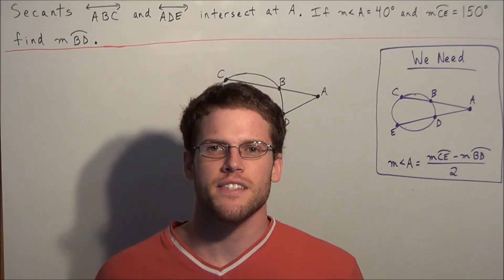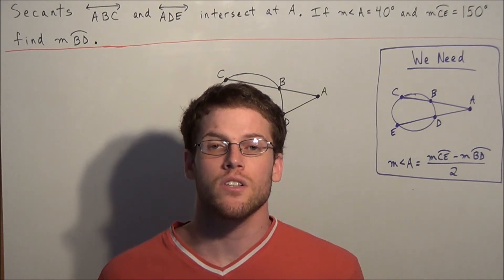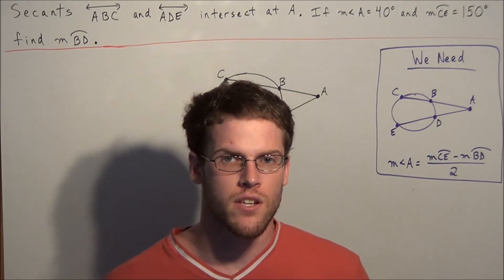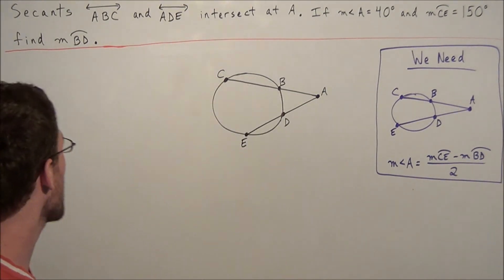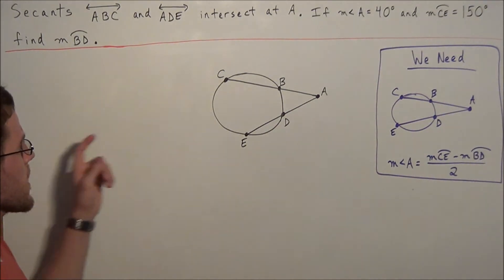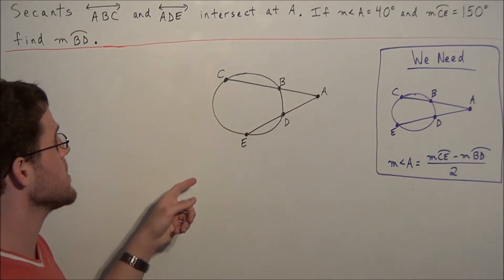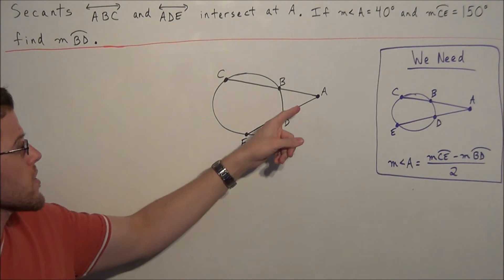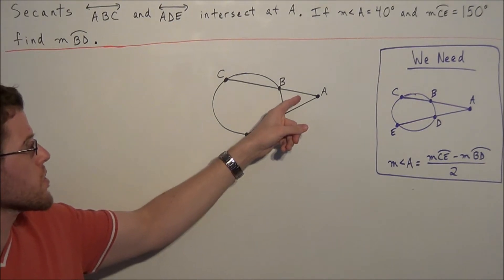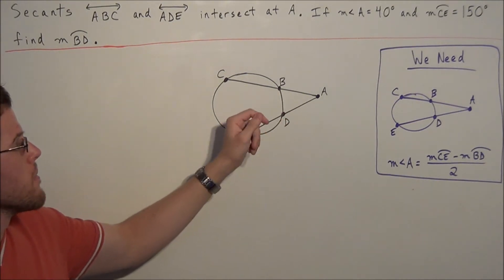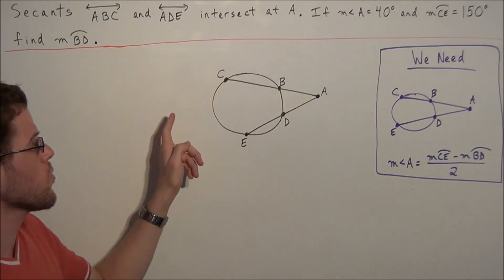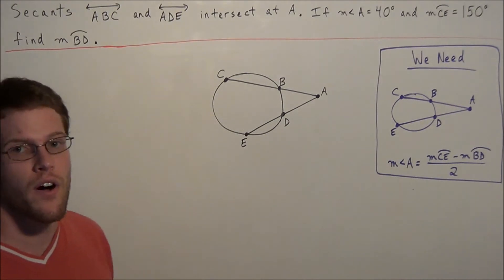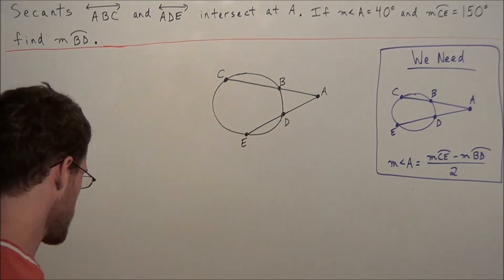Hi, my name is Vincent and today I want to take a look at angles formed by intersecting secants. We have the problem: secants ABC and ADE intersect at point A. If the measure of angle A is 40 degrees and the measure of arc CE is equal to 150 degrees, we need to find the measure of arc BD.